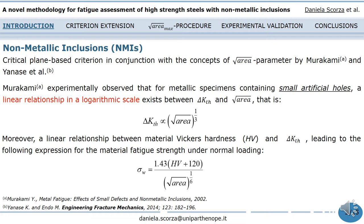They found a linear relationship between the threshold value of the stress intensity factor range and the square root area in a logarithmic scale, such an area being obtained as the projection of the crack into the plane perpendicular to the maximum principal stress. Moreover, Murakami et al. observed a linear relationship between the material Vickers hardness and the threshold stress intensity factor range, leading to the expression here shown, used to define the material fatigue strength under normal loading.